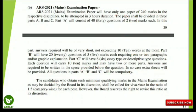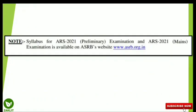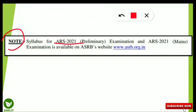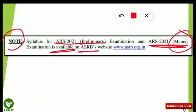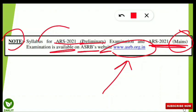Last but not least, the syllabus for the mains exam is very important. The syllabus for both the ARS 2021 preliminary exam and the ARS 2021 mains exam is available on the ASRB website: www.asrb.org.in. There you will find the syllabus according to your paper for the mains examination, just as you already found it for the prelims exam. If you haven't gone through the syllabus, do so, read it properly, and prepare well for the exam.